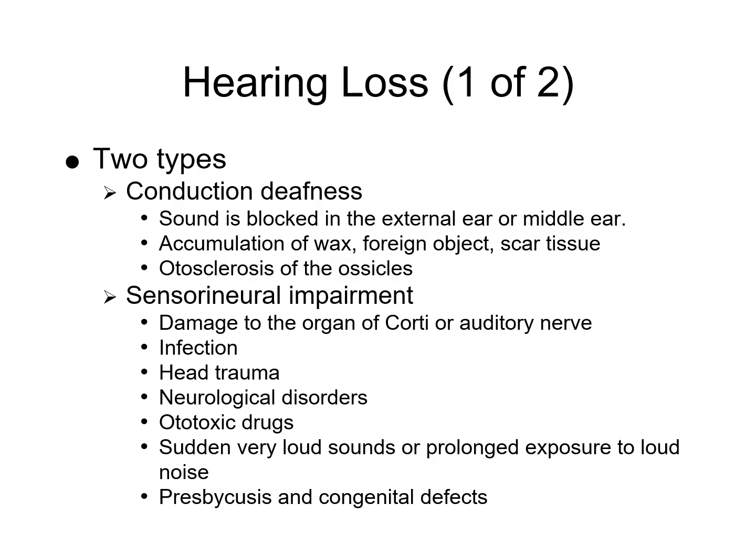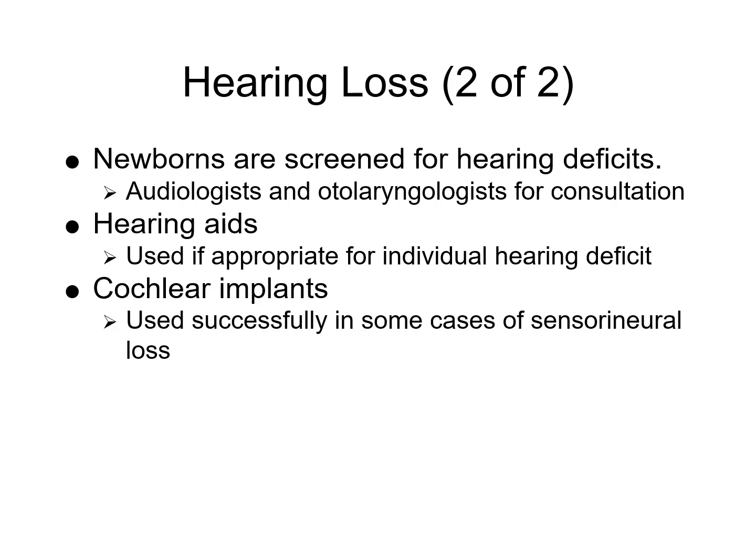Presbycusis is sensorineural hearing loss that usually occurs in the elderly due to a reduced number of hair cells or other degeneration in the cochlea. Congenital deafness is inherited or can result from infection or trauma during pregnancy or delivery. Early diagnosis and treatment are important to help with the child's development, as hearing impairment in young children can interfere with speech, social development, learning, and can lead to depression. Assistive devices including hearing aids are now available to help improve communication skills.